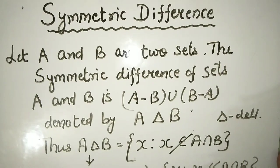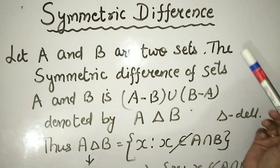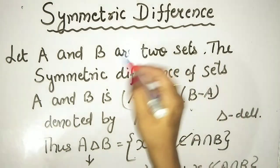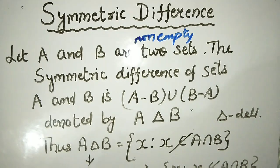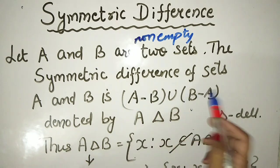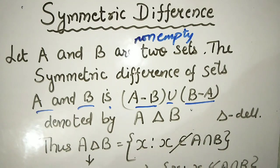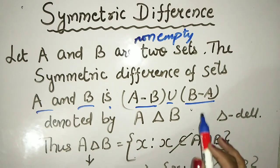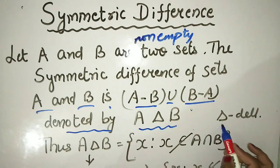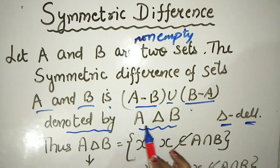Thank you students. Grade 11, your next topic is symmetric difference. Although it is not mentioned in NCRT, you should still know the meaning of it because it is an important topic. If A and B are two non-empty sets, the symmetric difference of sets A and B is A minus B union B minus A. It is denoted by A del B — this triangle symbol is called 'del'.